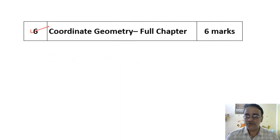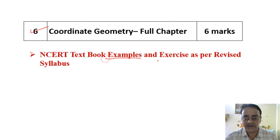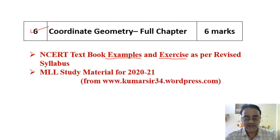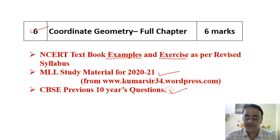Now Coordinate Geometry - this chapter has also become smaller because one part of this chapter, one topic has been removed, that is area of triangle. Only two topics are there - Distance Formula and Section Formula. In this also, textbook ke saare examples and exercise questions complete karne hai. Next thing, whatever the questions I am publishing in my minimum level study material that you have to complete, which is available in this blog. And CBSE previous 10 years questions. If you complete all these three parts from this chapter you can easily score six marks kyunki chapter bahut chhota ho gaya.